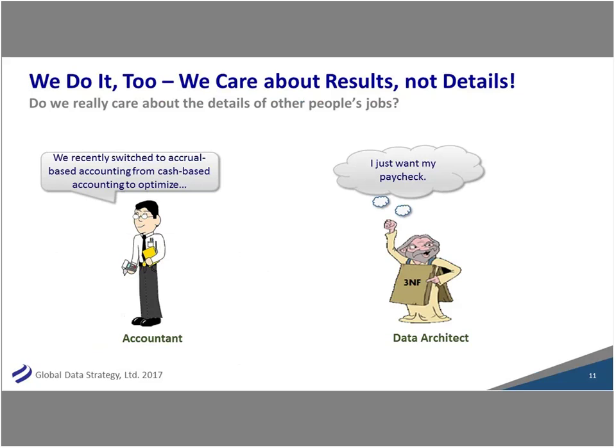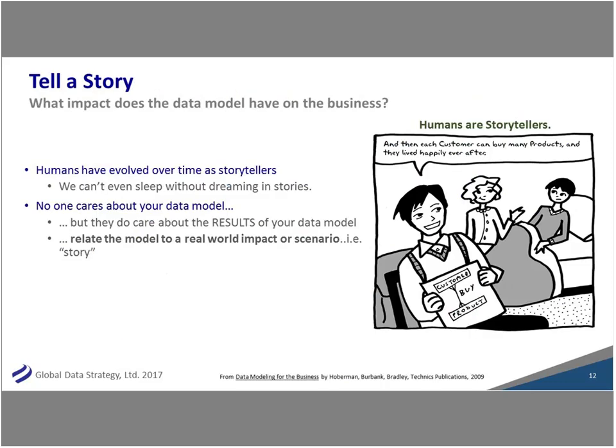Why don't people care about our data? Do you really care about anybody else's job? When the accountant comes to you about accrual-based accounting vs. cash pay, you just want your paycheck. Think of the engineer running the heating of your office — you just want the heat to work. You just want your car to start. Don't get too much into the details, but when you do, apply it to their job and how you can help them. And can we tell a story? That Janus quality — the fact that we can often communicate and explain the business — combined with the fact that data models are naturally graphical, means we should be able to tell that story.